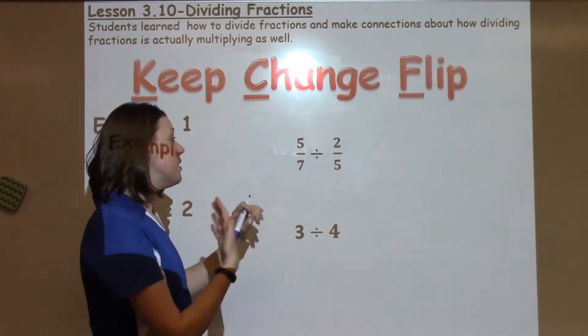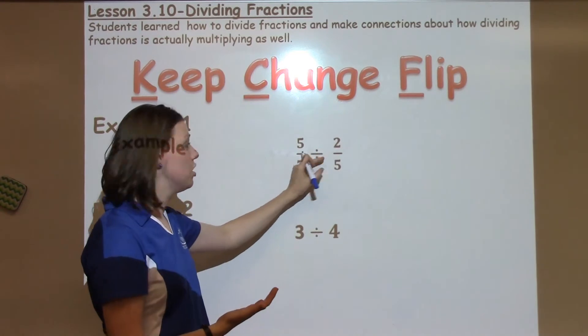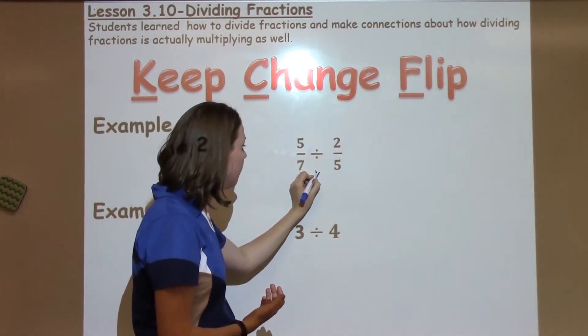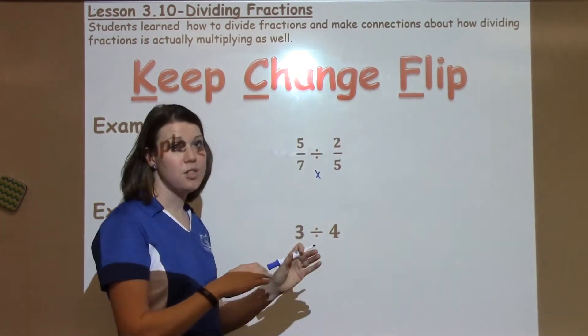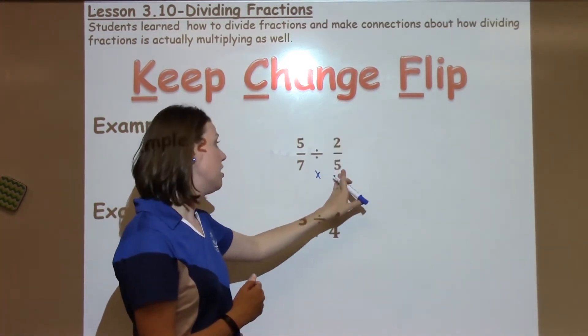So they say it one time, and the second time they actually do the operations they need to do. So keep, we're going to change division to multiplication, and I need to flip. Flip just means the reciprocal. We're taking the denominator and putting the numerator, and the numerator into the denominator.